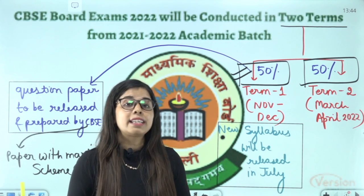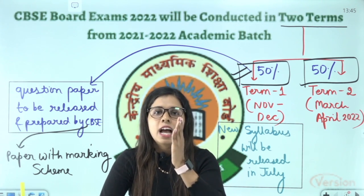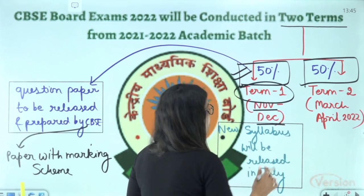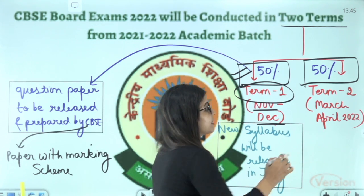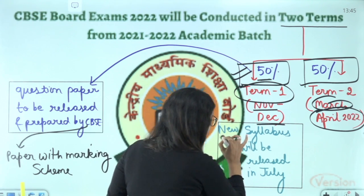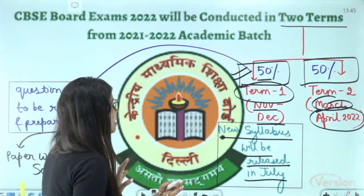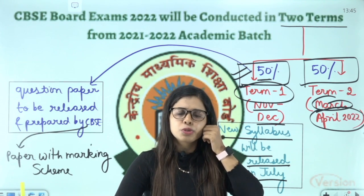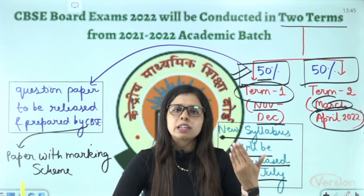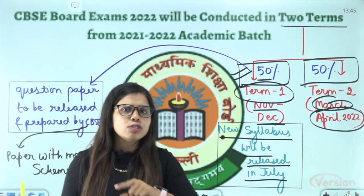In Term 1, we hope that there are two parts for chemistry, physics, bio, and maths — but we are not sure how many parts there are. Considering that, you will have the first part of the book for Term 1. The Term 1 exam will be conducted in November or December, and the Term 2 exam will be conducted in March or April 2022. The new syllabus is going to be released on CBSE's official website, so we need to be updated for that. There are chances that there will be a little syllabus reduction — not sure, just a tentative idea.